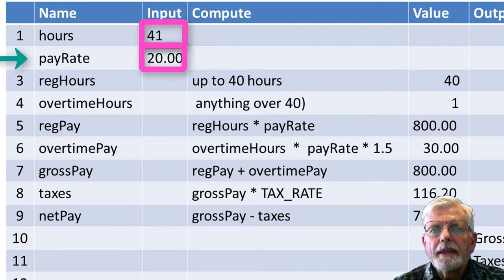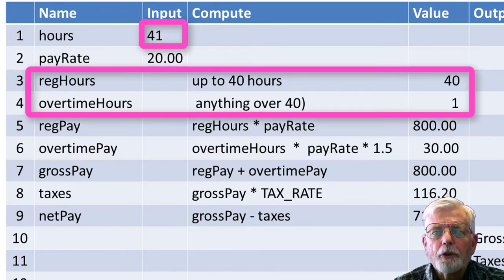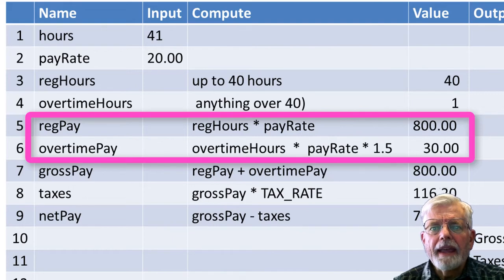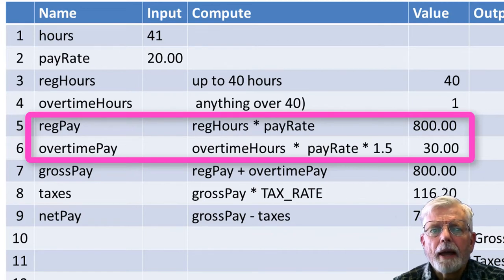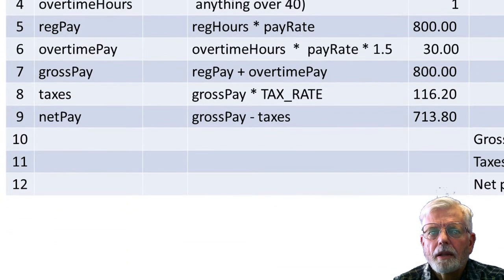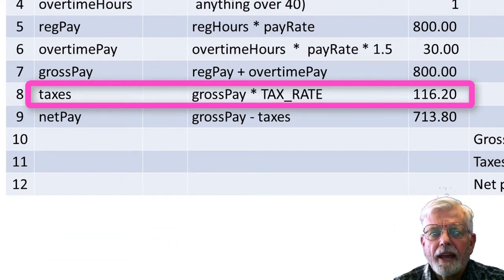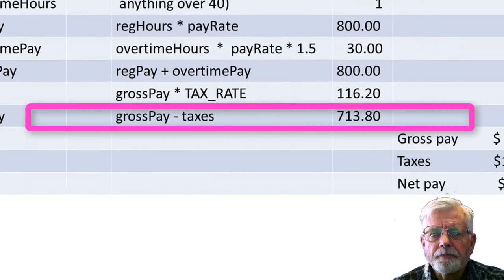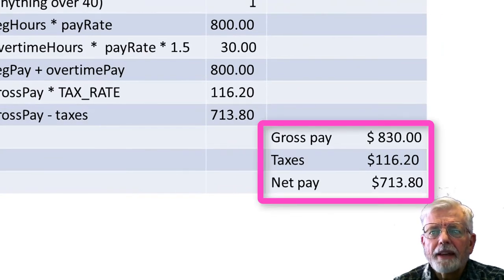This chart shows the sequence of events that occur as the program executes with an input for hours at 41 and the input for pay rate at 20. Since 41 hours were input, the hours are separated into regular hours equal to 40 and overtime hours at 1. Once we have separated the hours, we can compute the pay for each category. Regular pay is equal to 800, which is 40 times 20. Overtime pay is $30 per hour — 1 hour times the pay rate times 1.5 to get time and a half. The regular pay and overtime pay are added together to get the gross pay. Taxes are computed as the gross pay times the tax rate. Net pay is equal to gross pay minus taxes. Finally, display the employee name, gross pay, taxes, and net pay.